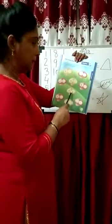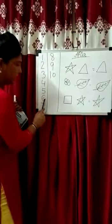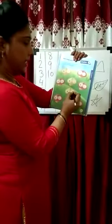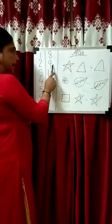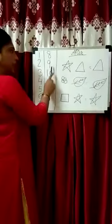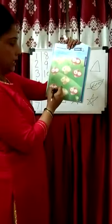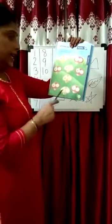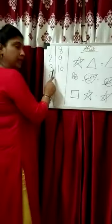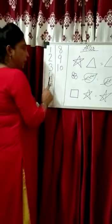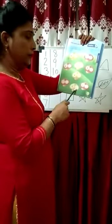Here is 6 — 7 is after 6, so the answer is 7. Next is 9 — 10 is after 9, so the answer is 10. Here is 3 — 4 is after 3, so the answer is 4.